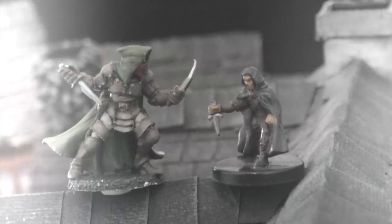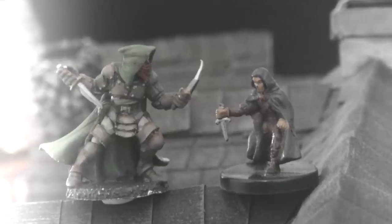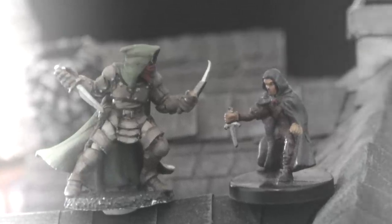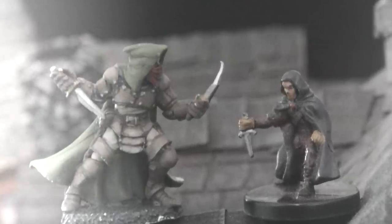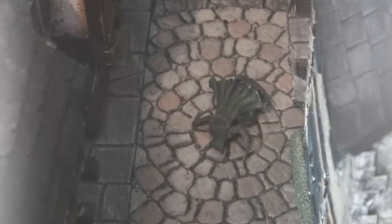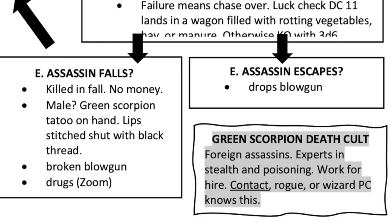The assassin will engage in hand-to-hand combat for two rounds. His AC is 14 — he's not wearing armor. If the assassin hits the player character, call for a DC 11 dexterity check; if they fail, they fall off the building into a canal. If the character hits the assassin, he automatically slips and falls to his death on the cobblestone street below. Searching his body reveals no money, a green scorpion tattoo on his wrist, lips stitched shut with black thread, a broken ivory blowgun, and a single dose of Zoom — a drug that increases speed and dexterity. If the assassin escapes, have him accidentally drop his blowgun as a clue.